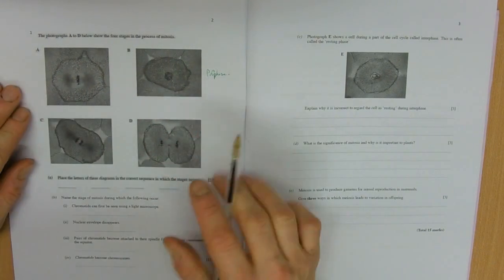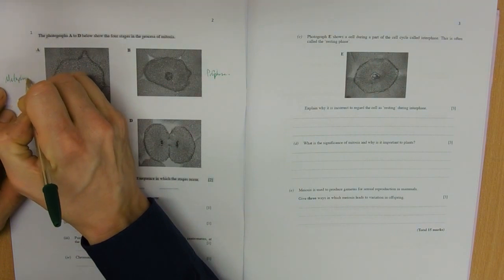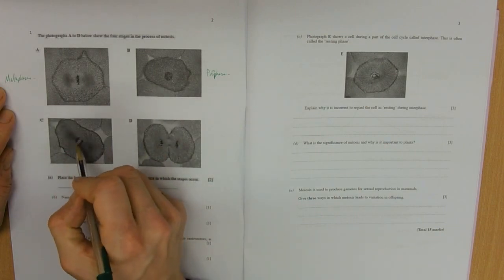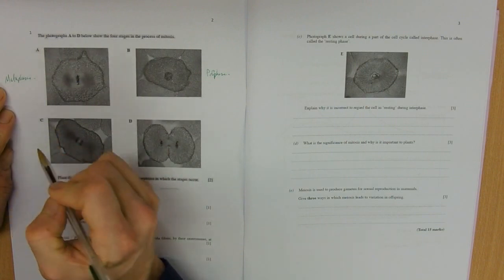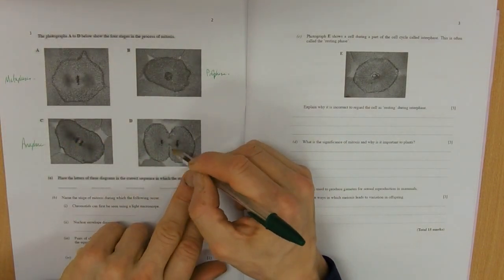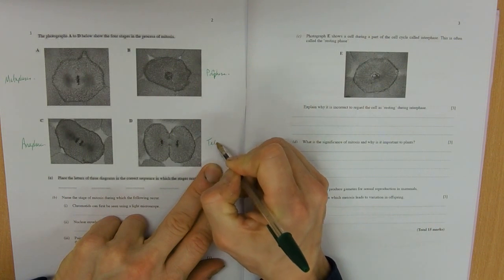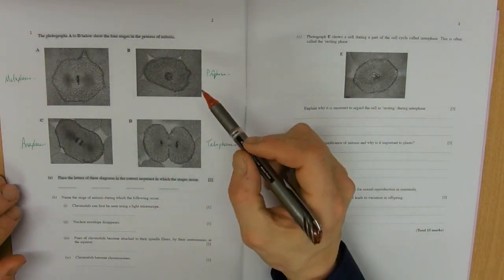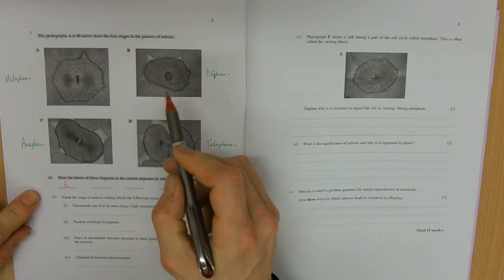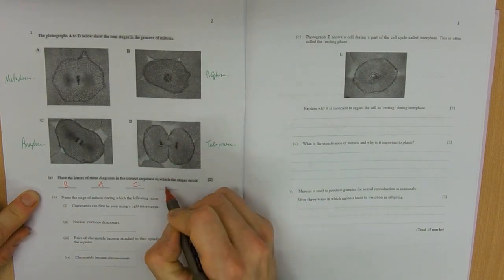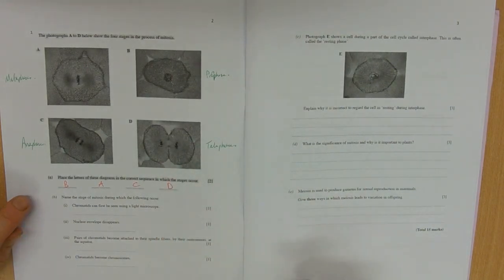You can see chromosomes lined up at the equator, so that would be metaphase. You can see that one's almost at two cells, that's going to be the last stage. We've got anaphase here, separation of the chromosomes or chromatids. And this almost ready for two new cells, so that would be telophase. Place them in the correct sequence: prophase is going to be first, so it's going to be B, metaphase which is A, anaphase C, and the last one is telophase D. Two marks, two fairly straightforward marks there.